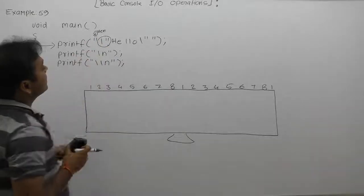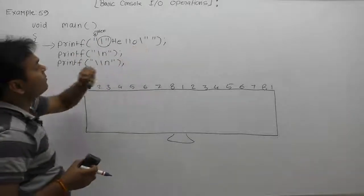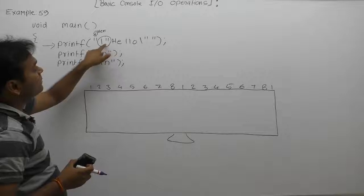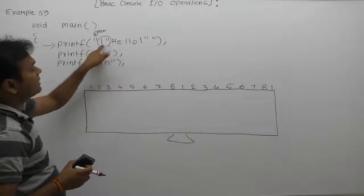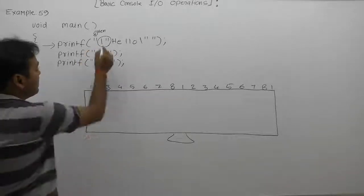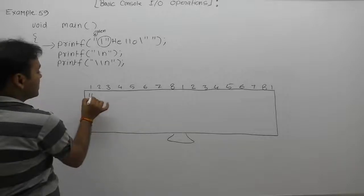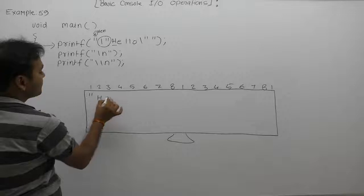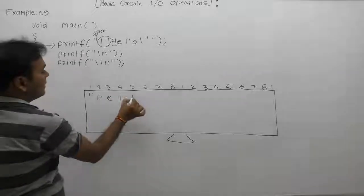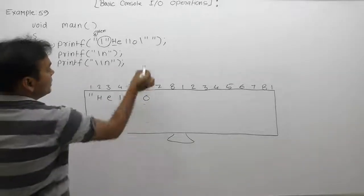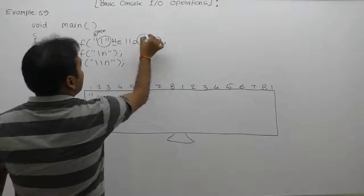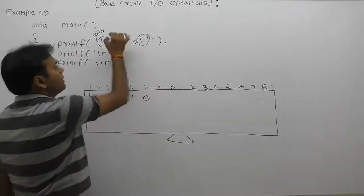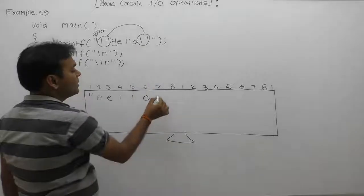Double quotes is an escape sequence character which is directly got printed. It will print double quotes here, then next one it will print H-E-L-L-O. Then again next time double quote. Again, it is also same as previous. Again, it is a display, simply double quotes.